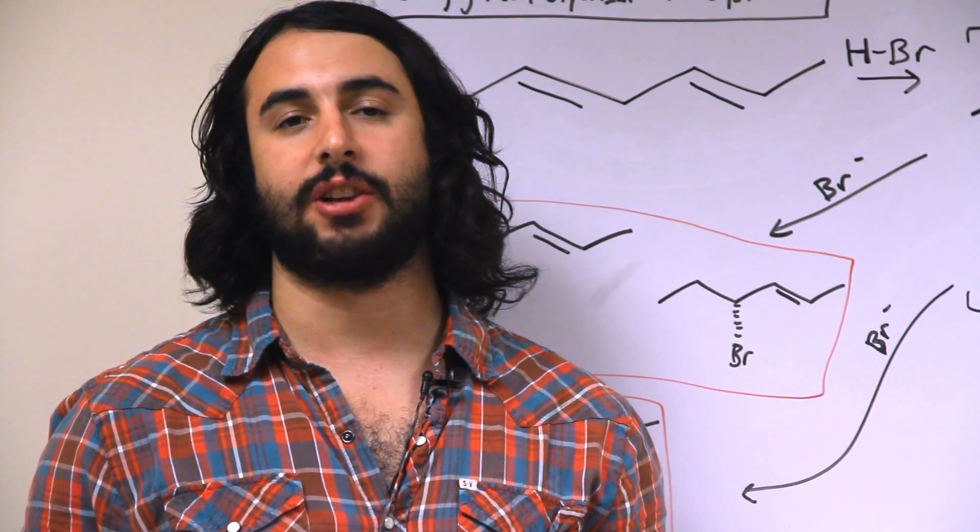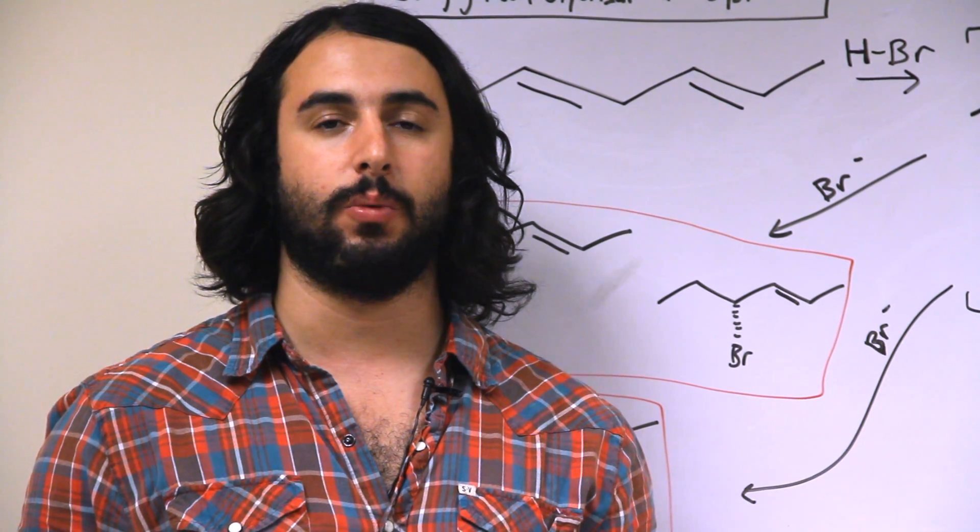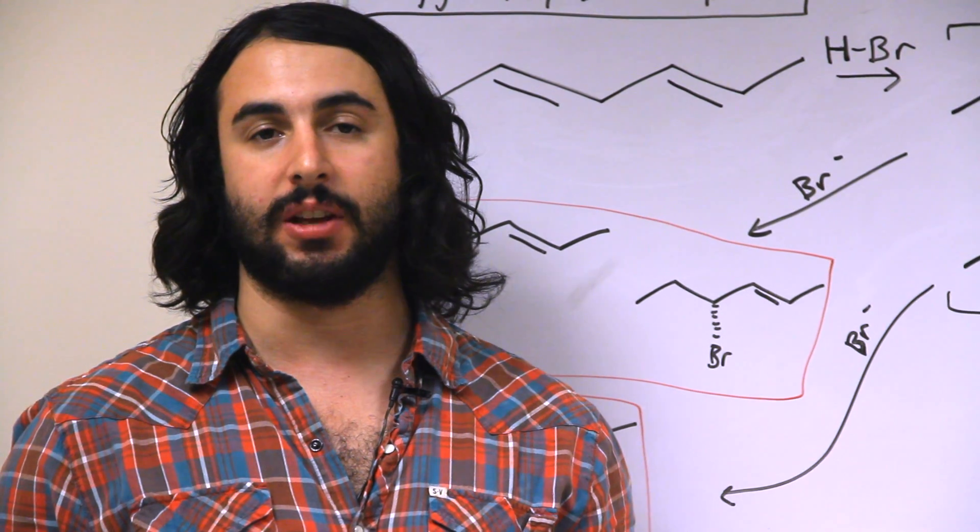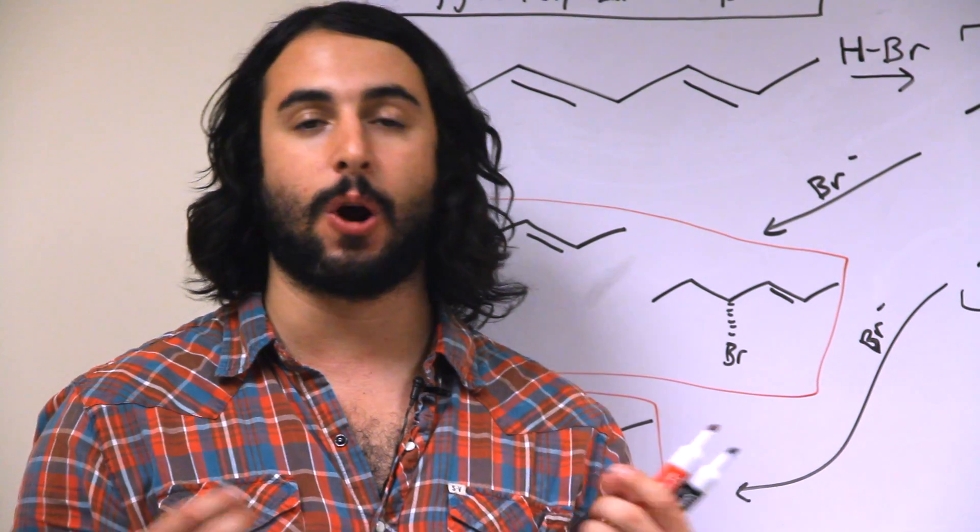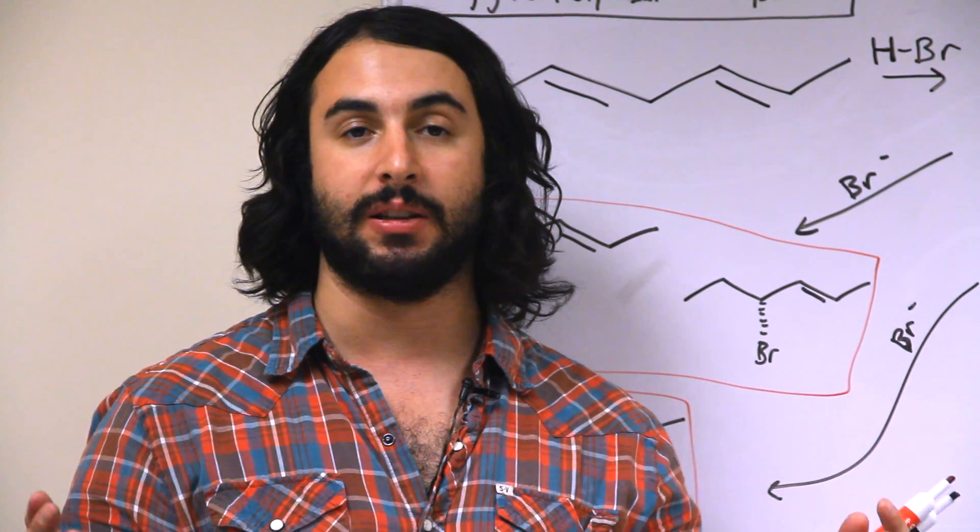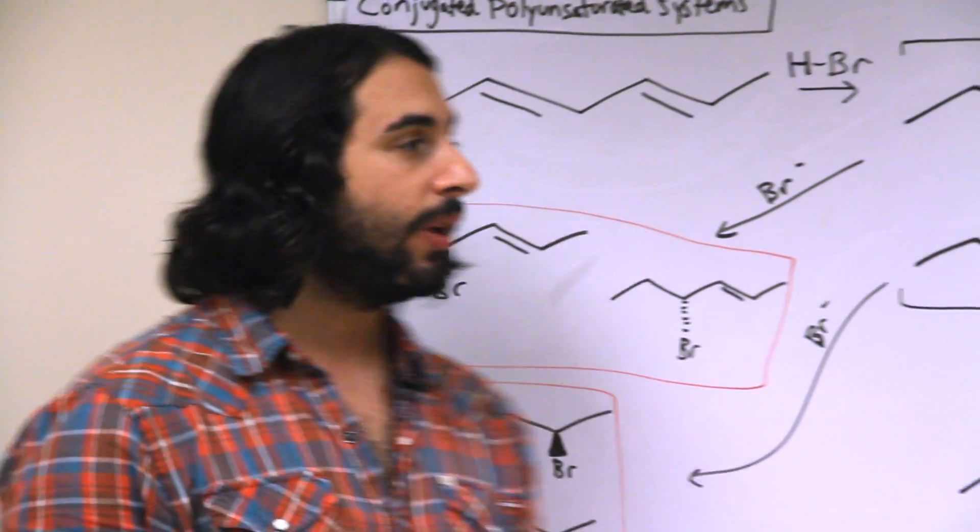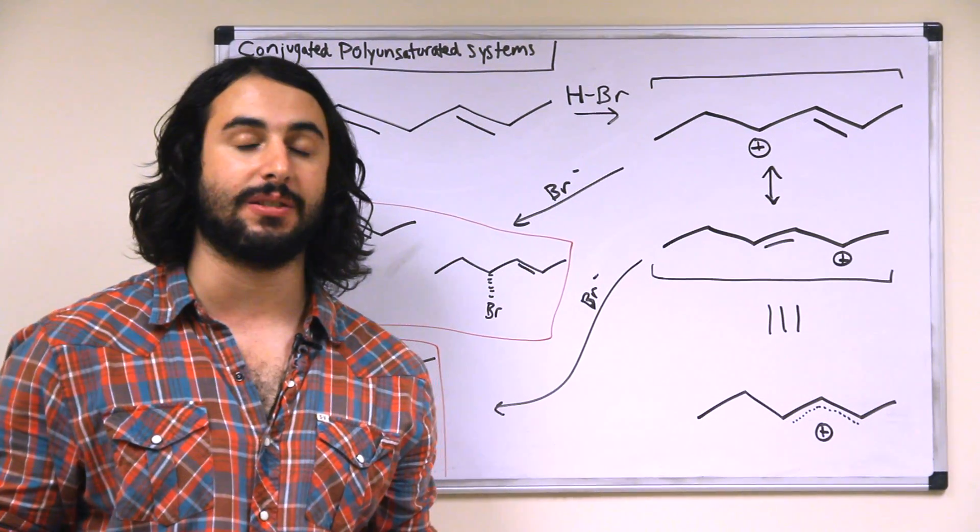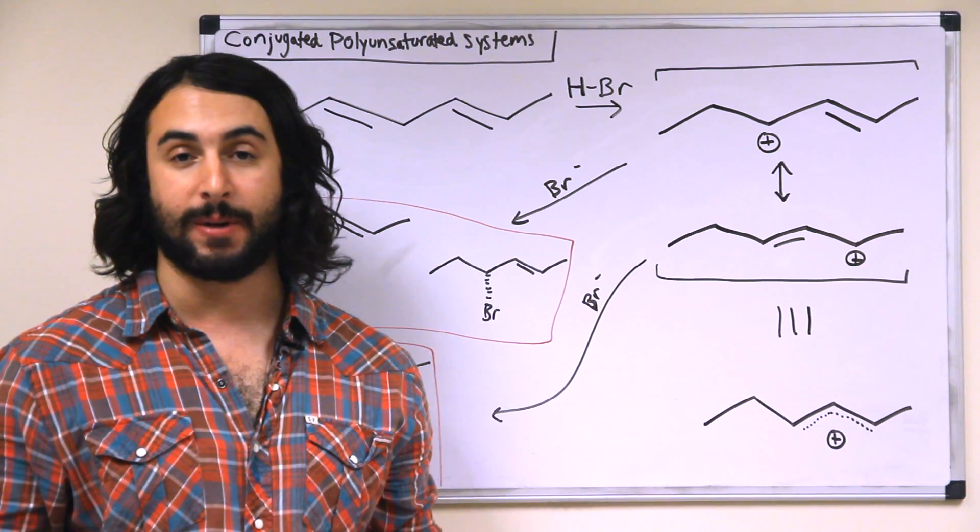If we consider a fully saturated hydrocarbon to be one with maximum hydrogen content, then any pi bond is going to be a degree of unsaturation because if carbons have additional bonds between them they cannot be bound to as many hydrogens as they could. So any pi bond is a degree of unsaturation, so a polyunsaturated system is a system with multiple pi bonds.